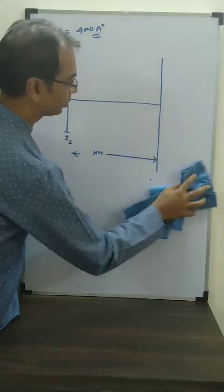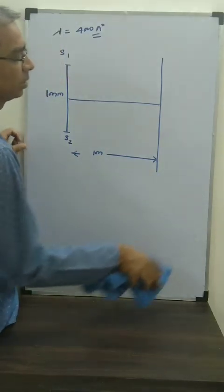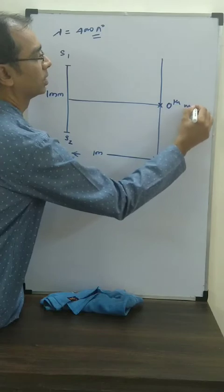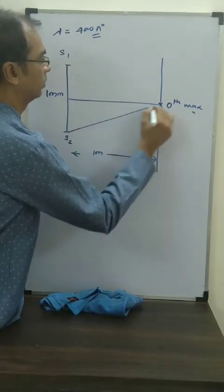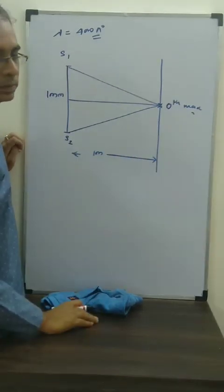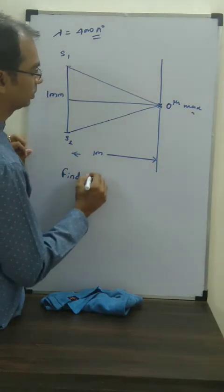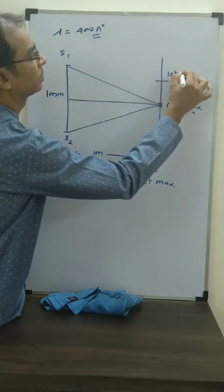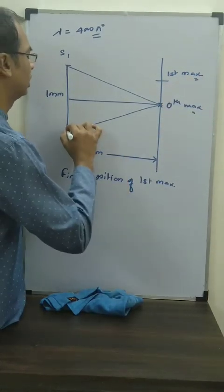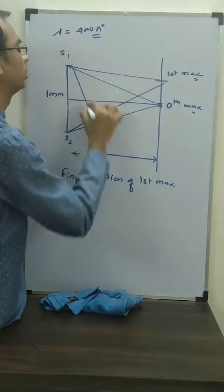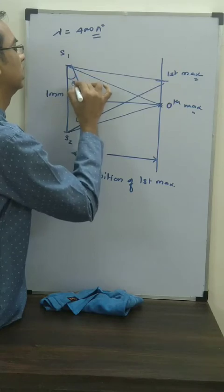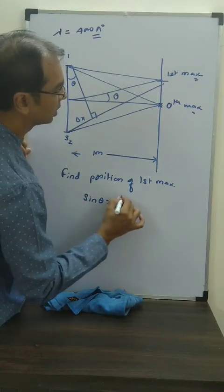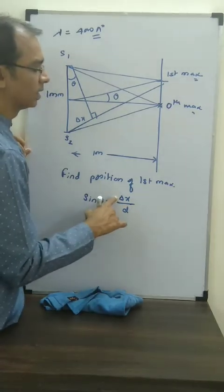Suppose I ask: find the position of the first maxima. The central maxima is at position zero because the path difference between the two sources is zero at that point. For the first maxima, we draw the geometry: join s1 to the point and drop the perpendicular. This gives us delta x, and the angle theta appears in the construction. We write: sin theta = delta x / d.